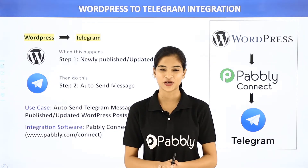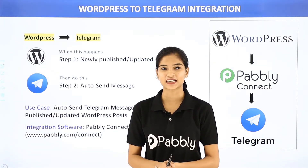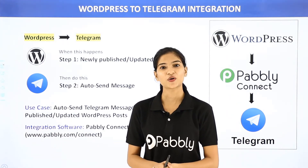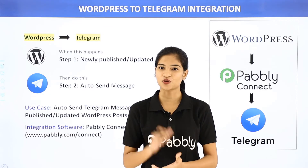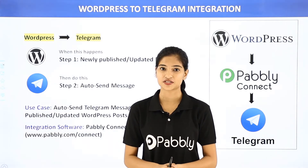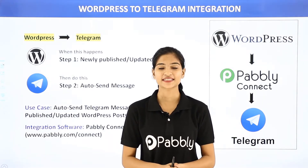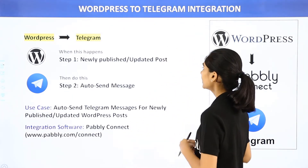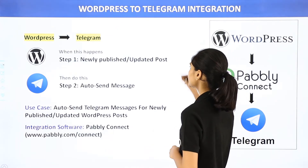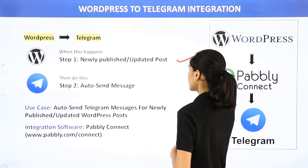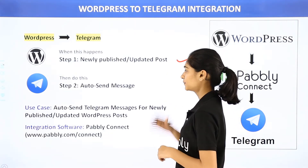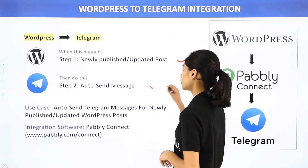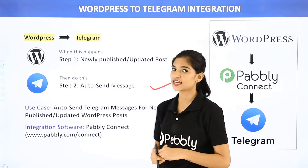Hello everyone, welcome to Pabbly Connect. Today in this video, we are going to integrate two software applications, WordPress and Telegram. The use case here is: whenever a new post is published or updated in WordPress, we want to send a message automatically in Telegram.